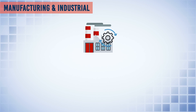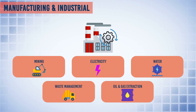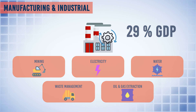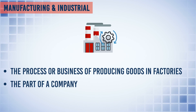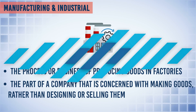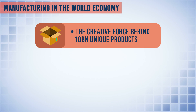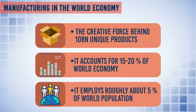In manufacturing and industrial terms, manufacturing is one of the production industries, which also includes mining, electricity, water, waste management, and oil and gas extraction. In 2016, the Indian manufacturing and industrial sector accounted for 29% of the total Indian GDP value. The process of producing goods in factories is known as manufacturing. The part of a company concerned with making goods rather than designing or selling them is known as manufacturers or industrialists. Manufacturing is the creative force behind 10 billion unique products, accounts for 15–20% of the world economy, and employs roughly 5% of the world population.